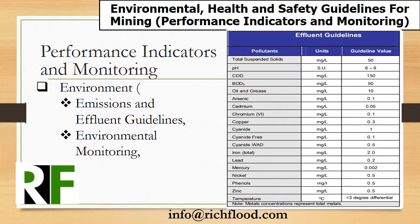The table presents effluent guideline values for the sector, indicative of good international industry practice as reflected in relevant standards of different countries and their regulatory frameworks. These guidelines should be achievable under normal operating conditions in appropriately designed and operated facilities through the application of pollution prevention and control techniques. These levels should be achieved without dilution at least 95% of the time the plant or unit is operating, calculated as a proportion of annual operating hours.